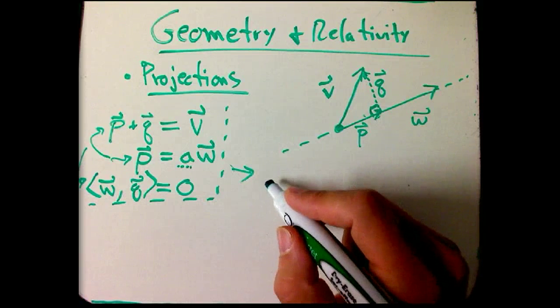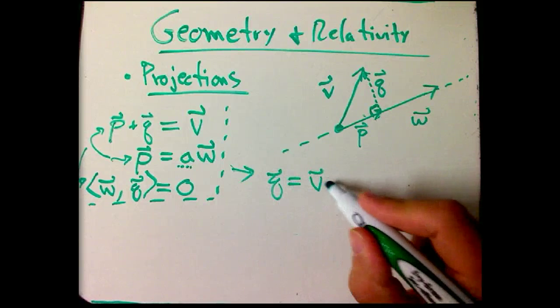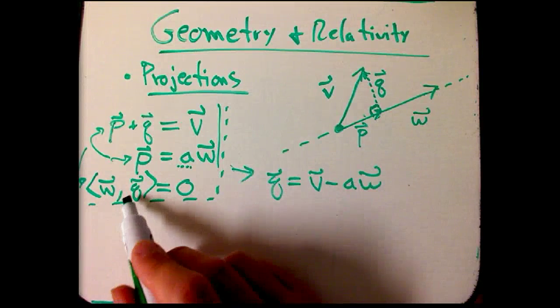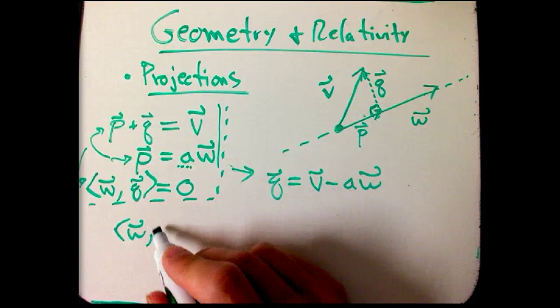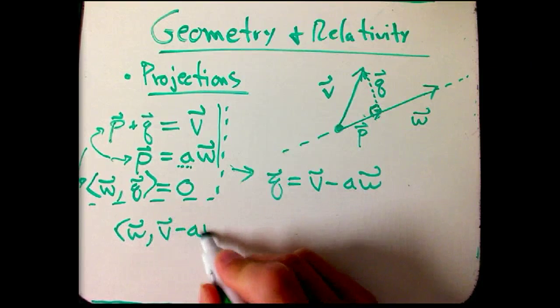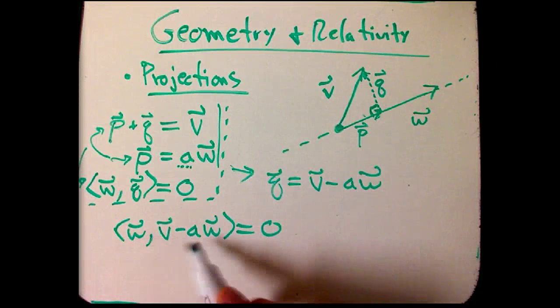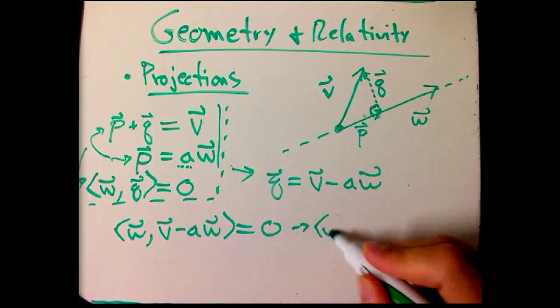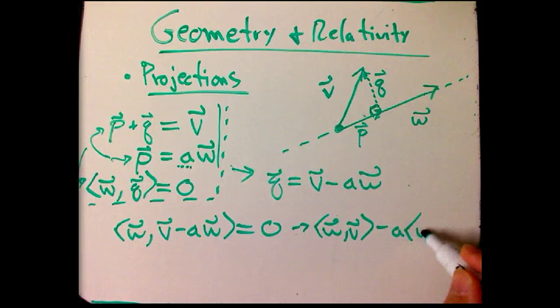So what we get is that Q is V minus AW, just combining these equations and solving for Q because that's what appears here. And so then we get that the scalar product of W with V minus AW is zero. I can use bilinearity there. And so that says that the scalar product of W with V minus A times the scalar product of W with W is zero.